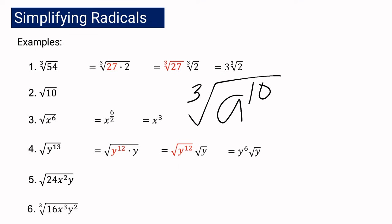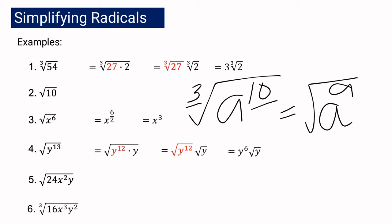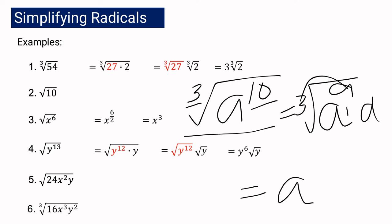Let's have one more example. Suppose we have the cube root of a to the 10th. We split the exponent so that one part is divisible by 3 and the other is less than 3. The correct factors are a raised to the 9th — which is divisible by 3 — multiplied by a, where the exponent 1 is already less than the index 3. So to simplify, we have 9 divided by 3 giving a cubed, and then we write the cube root of a.